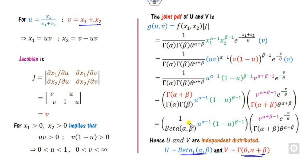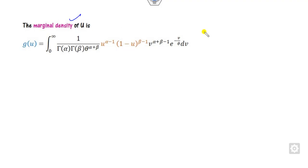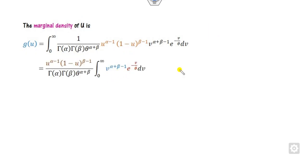Alternatively, if you are unable to remember the PDFs directly, you can find the joint density function and then compute the marginal density functions. To find the marginal density of v, integrate over u. The terms not involving u are taken outside the integral as constants.